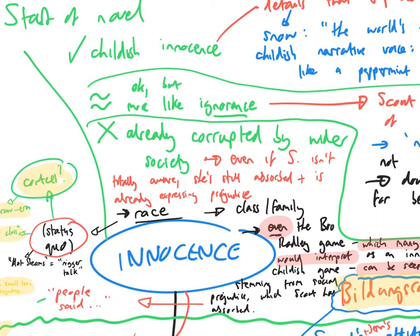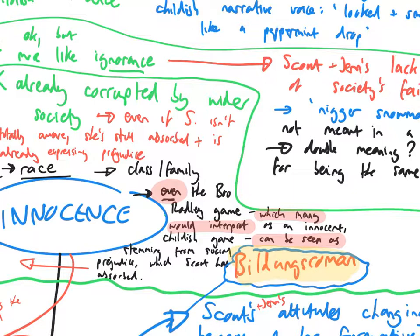Another way that Scout has absorbed prejudice is class or family prejudice. Here is where you can get some good argument in. The Boo Radley game, many would say that it's just an innocent childish pastime. However, think about where they get all this information about Boo Radley from. Think about where they get this image of him as a quote malevolent phantom and so on. It comes from the prejudice of society. It comes from gossip, from rumours. Remember, Harper Lee is quite specific. A quote that's repeated in this initial description of Boo Radley is people said, people said.